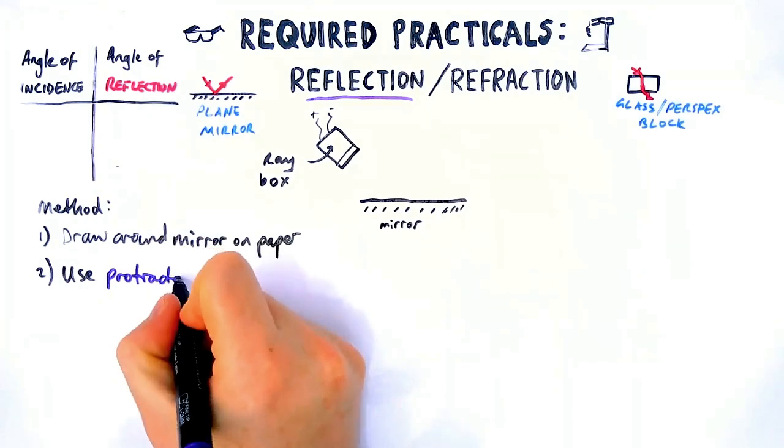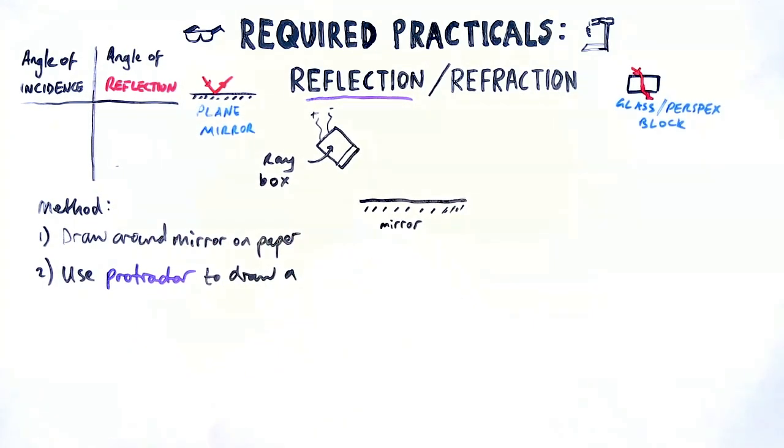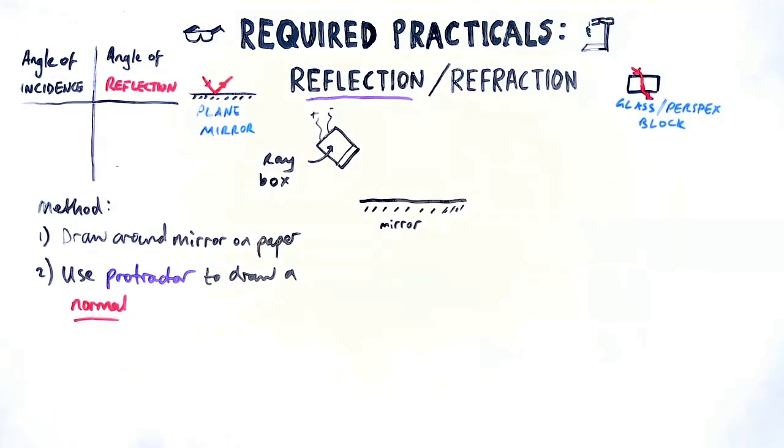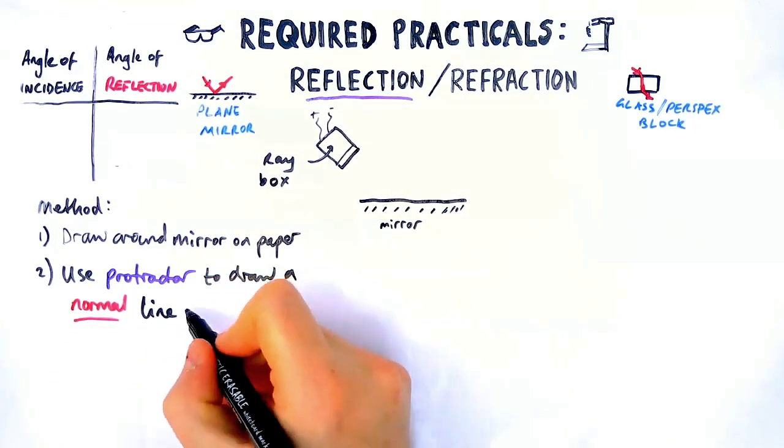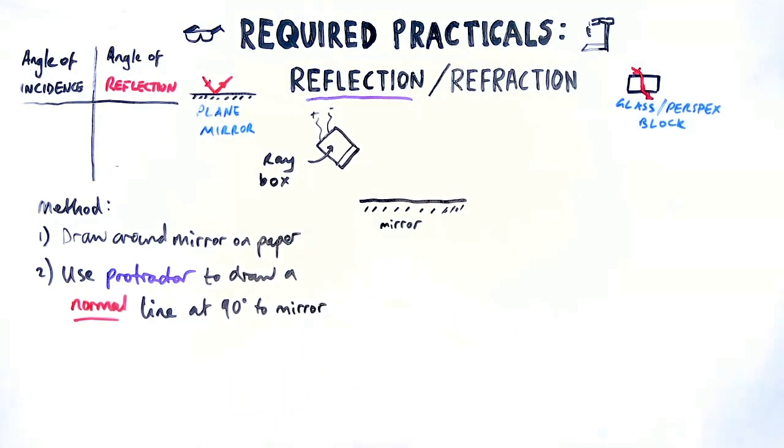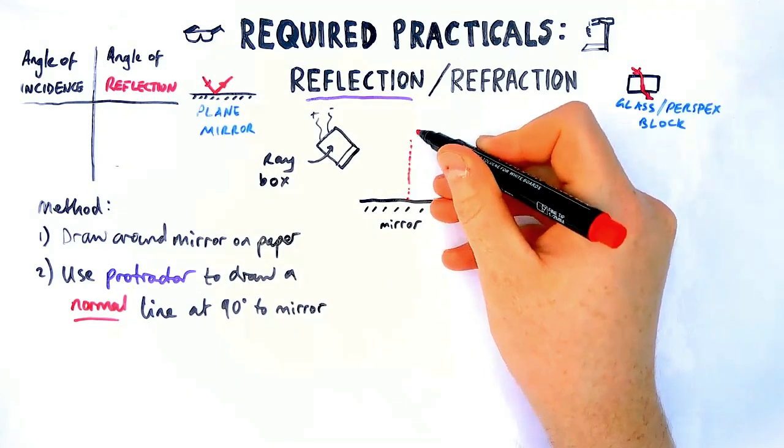Next we are going to use a protractor, really important to remember protractors in this experiment, protractor to draw a normal line on the mirror that is 90 degrees to the surface. So let's draw on what that would look like. Sometimes you get a diagram in an exam. It's helpful. So a little dotted line, 90 degrees to the mirror.